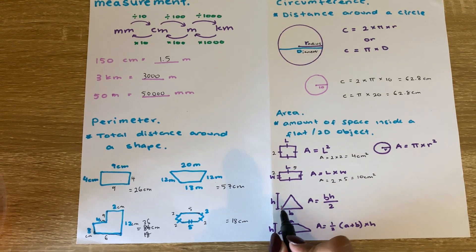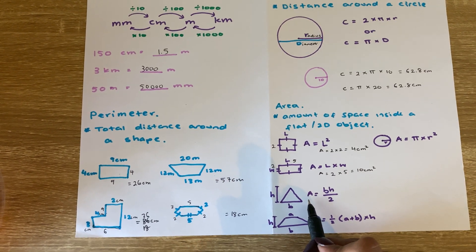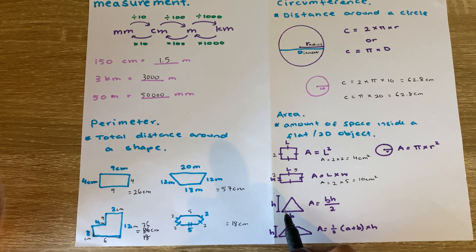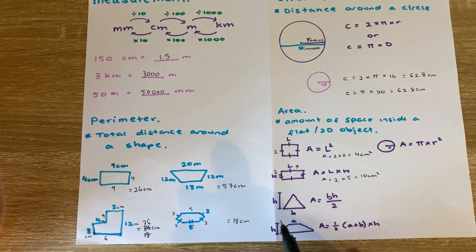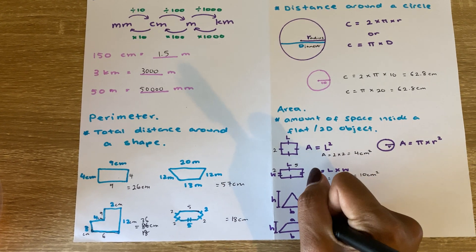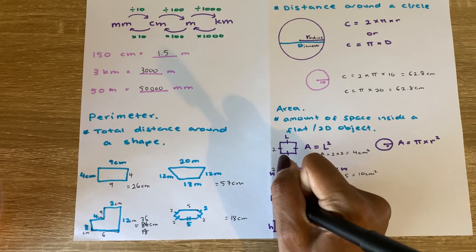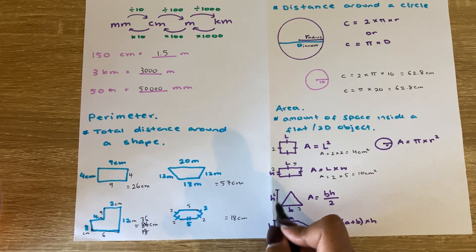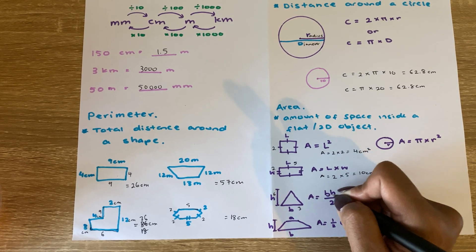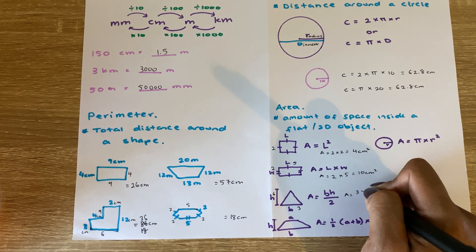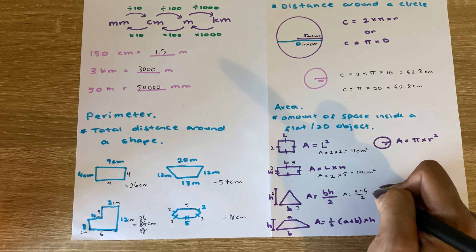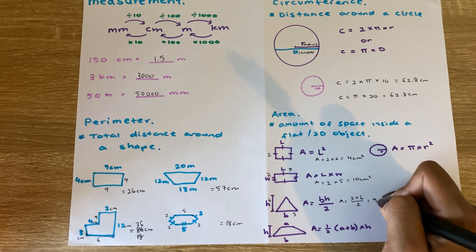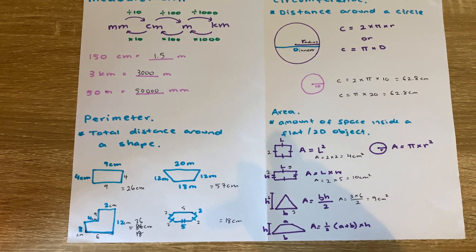To find the area of a triangle, you do base times height divided by 2. If the base is 3 centimeters and the height is 6 centimeters, the area is 3 times 6 divided by 2. That's 18 divided by 2, which equals 9 centimeters squared.